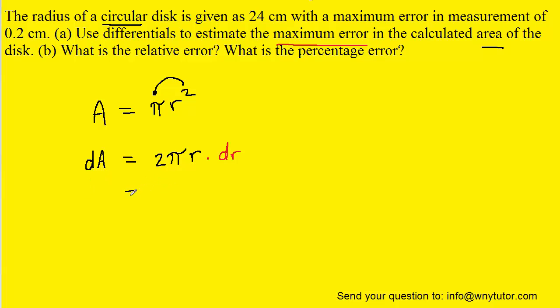Which means that all we need to do is to plug into the right side the radius as well as dr. Now, dr also represents an error, but it would be the error in the radius, which was given to us as being 0.2 centimeters. So we'll go ahead and we'll plug in for the radius 24 centimeters, and then the error in measuring the radius as 0.2 centimeters.